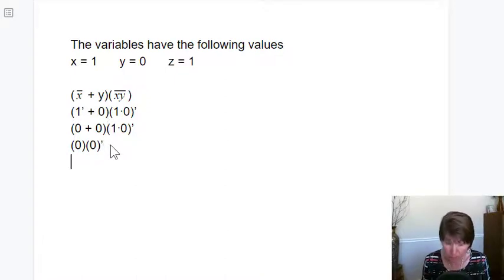So we have, and we can drop the parentheses since they're individual ones. So what we really have is 0 times, and now the complement of 0, which is 1. And we do 0 times 1, and we get 0. And that's the result of that expression when x is 1, y is 0, and z is 1.